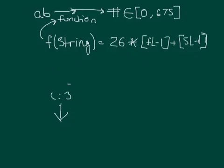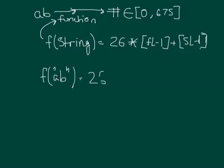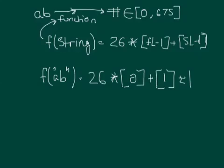Now using this function, we can take AB and determine exactly what integer it lies in. This ends up being the value f of AB, the string here, ends up becoming 26 times 0 plus 2 minus 1 is 1, which ends up evaluating to 1.